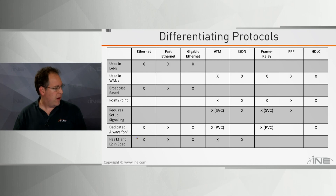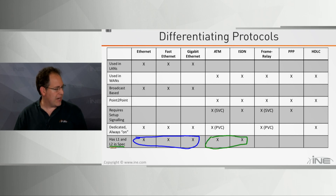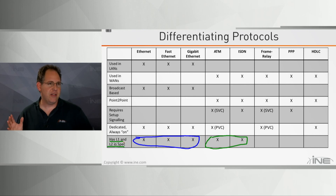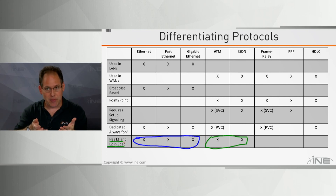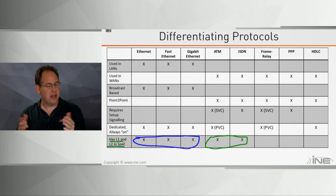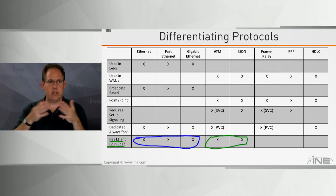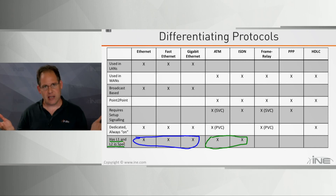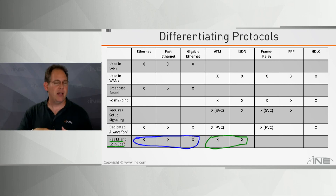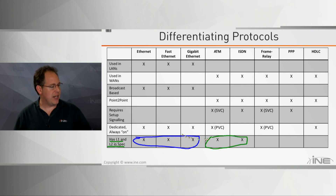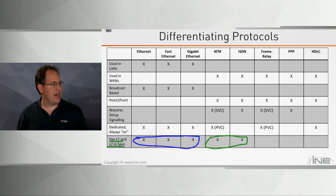Finally, some of these layer 2 specifications also reside at layer 1 of the OSI model. All flavors of Ethernet, as well as ATM and ISDN, not only specify layer 2 behavior but also layer 1 — answering questions like what does the cable look like, does it use copper, how many strands, how long can the cable be, what voltage represents a one versus a zero. So Ethernet, ATM, and ISDN specify both layer 1 and layer 2.